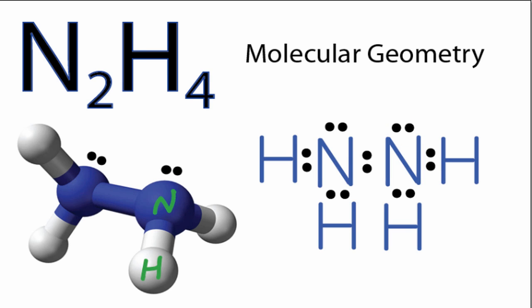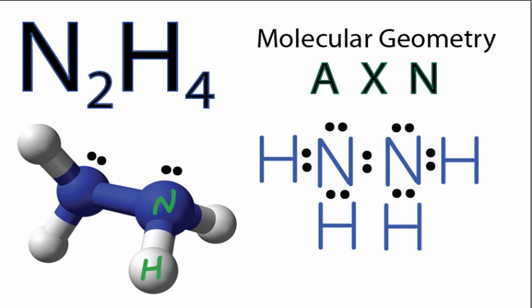You can also use the AXN notation to determine the molecular geometry for N2H4. A is the nitrogen we're interested in. X is the number of atoms attached—we have two hydrogens and one nitrogen, so that's a 3. And N is the lone pair of electrons, so we have one pair, which means we put a 1 here for N.